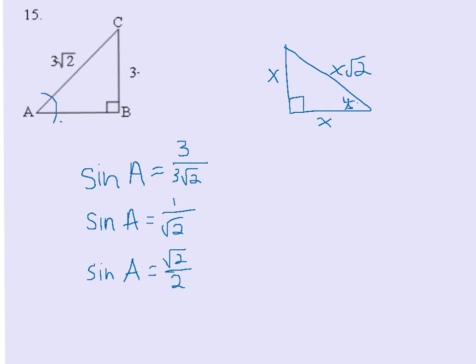If you have 1 over root 2, you're really dealing with a 45-45-90 triangle. If you make this side 1, then the hypotenuse is root 2. So the ratio 1 over root 2 is opposite over hypotenuse.